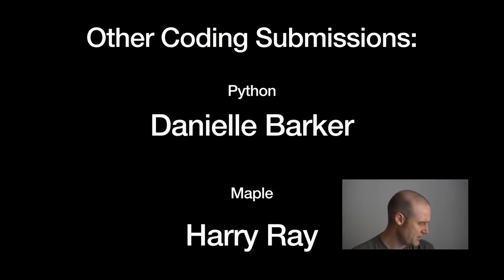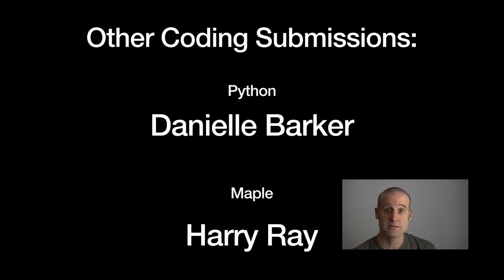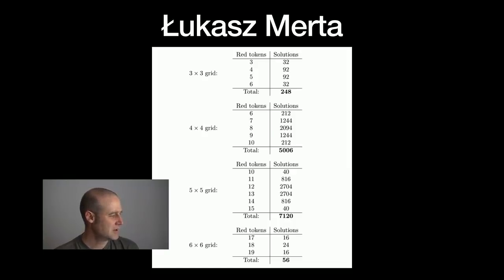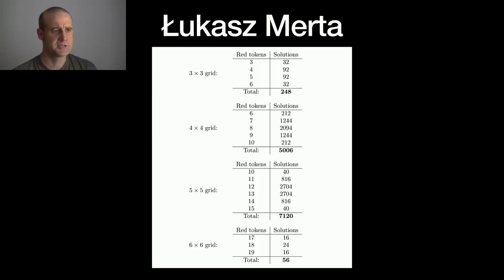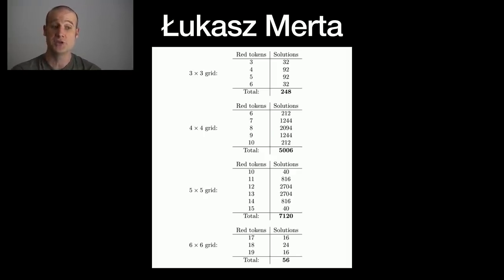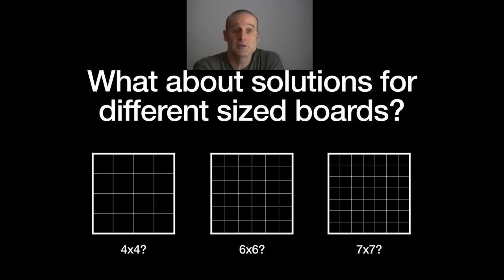Danielle did some Python code, which was lovely — so they get the Python mention this time around. Harry did Maple and described it as the 'oft neglected Maple', thought it might be nice to get some Maple involved for a change — good work Harry. Someone also used R to find all the solutions, doing it for different-sized grids — spoiler alert — and they got a total of 56 on the 6x6. Love what you're doing.